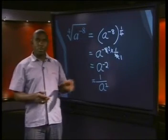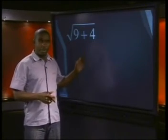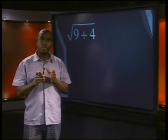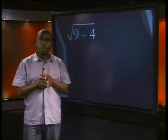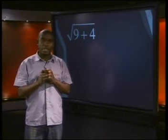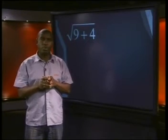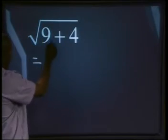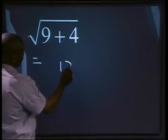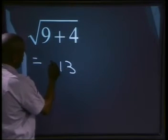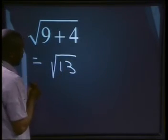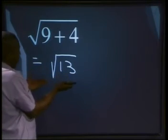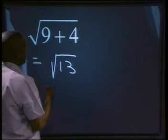Now try this one with a root sign. Be careful because a square root is like a bracket around the two terms, 9 and 4. You must first add the 9 and the 4. This will give us 9 plus 4 equals 13. That means we have to find the square root of 13. But 13 doesn't have a square root because it's not a perfect square. So this will be our answer.